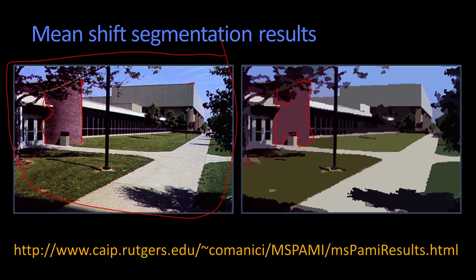Likewise, you get this front of this building here, and the whole sidewalk is in one cluster with the exception of over this area. Well, that's in a dark shadow from the tree. You'll notice the whole shadow has been put into one cluster because the system can't, at this point, know that it's a shadow.